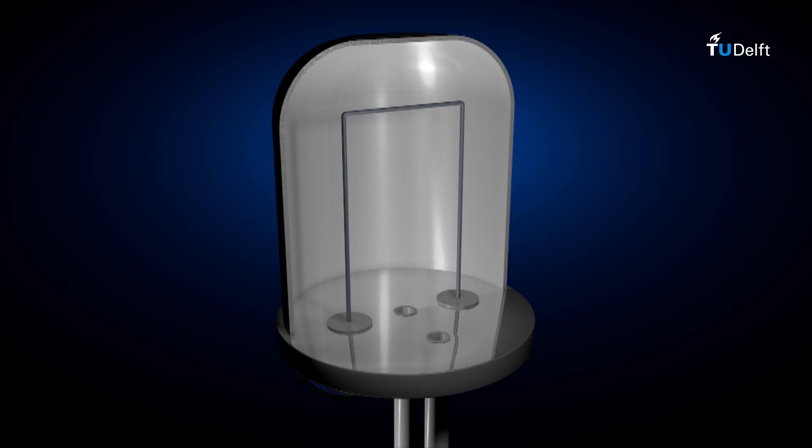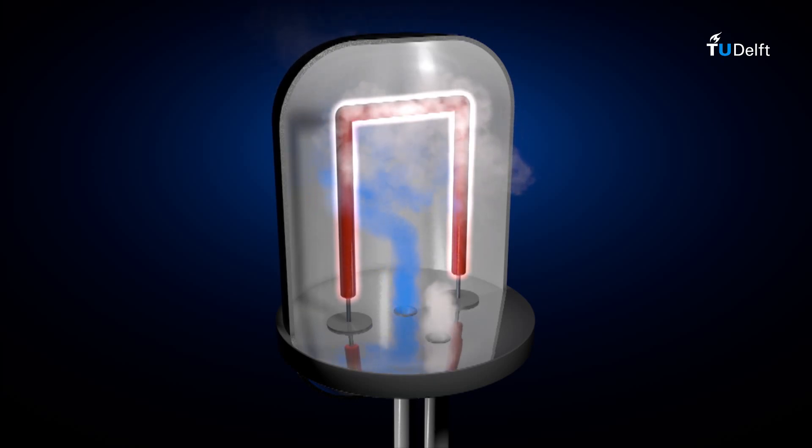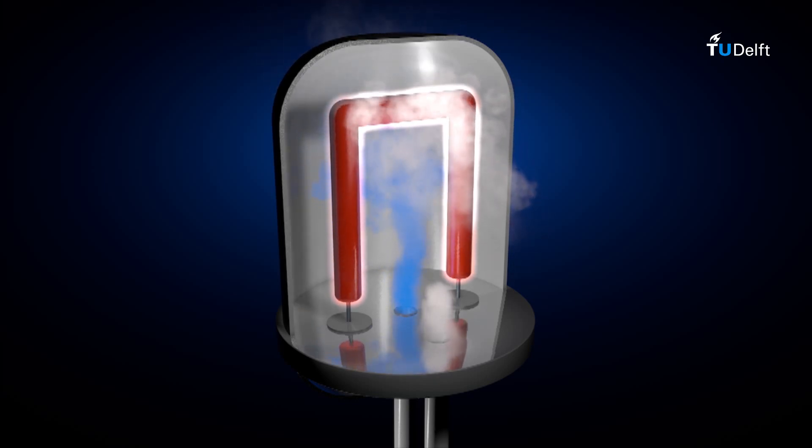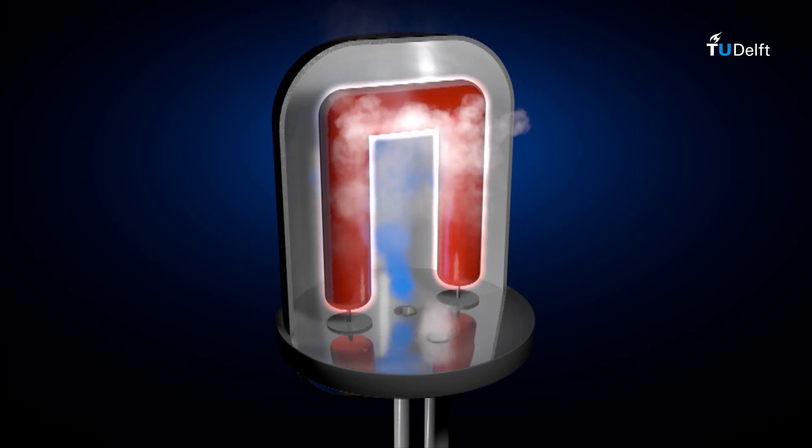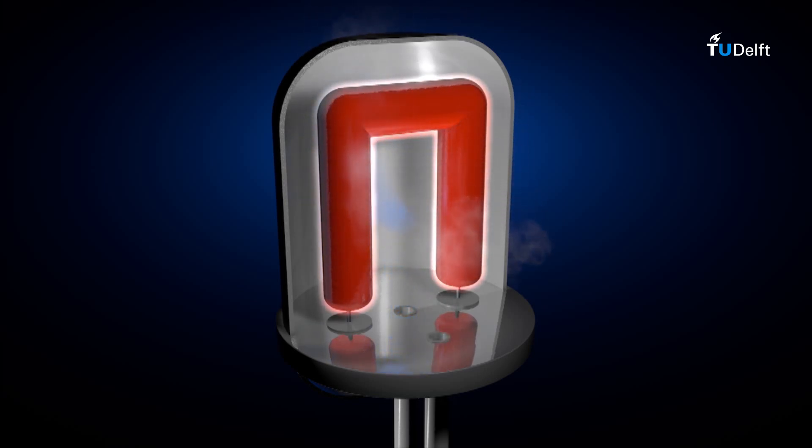Trichlorosilane reacts with the hot rods which are at a high temperature of 850 up to 1050 degrees Celsius. The silicon atoms are deposited on the rod, whereas the chlorine and hydrogen atoms are desorbed from the surface of the rod back into the gas phase. As a result a pure silicon material is grown and this deposition method is called chemical vapor deposition.